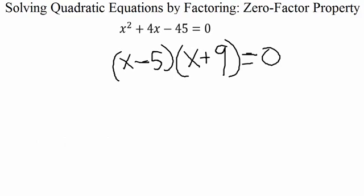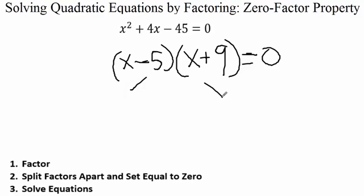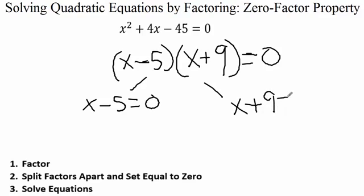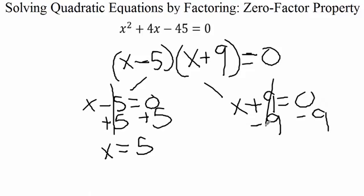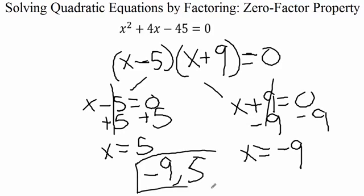Now that we have it factored, we move to step two: split the factors up and set them equal to zero. We have x minus 5 equals zero and x plus 9 equals zero. Solving the left: add 5 to both sides, giving x equals 5. Solving the right: subtract 9 from both sides, giving x equals negative 9. Our two solutions, in order from smallest to biggest, are negative 9 and positive 5.